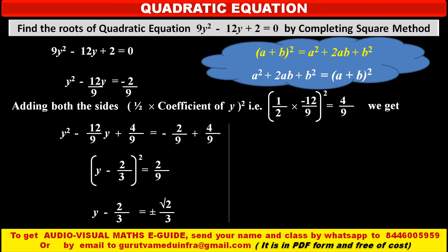Because we have to take square root that means it may be negative or positive, so we have to use sign plus or minus, so in the right hand side it is ±√2/3.